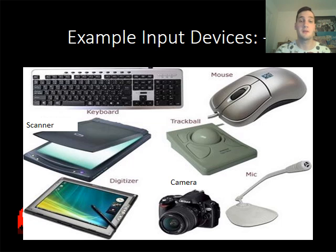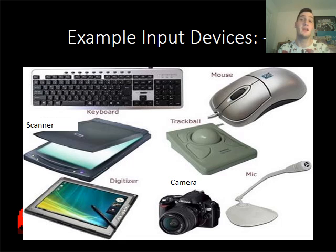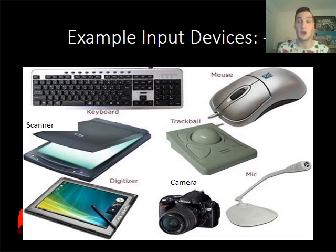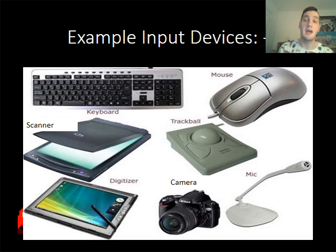Before I talk about communication devices, here are some examples of inputs: your keyboard, your mouse, your scanner, your digitizer, and your trackball — which is basically an upside-down mouse. Back in the day the mouse used to have a ball inside it which you could roll around on the desk to track movement; now they tend to use lasers. You also have a camera, because it takes a picture into the computer, and a microphone, which records sound.